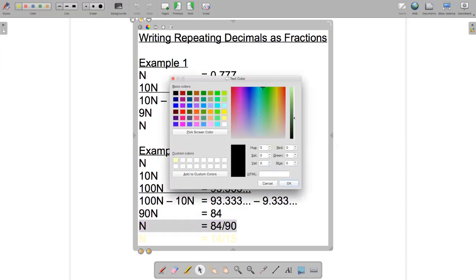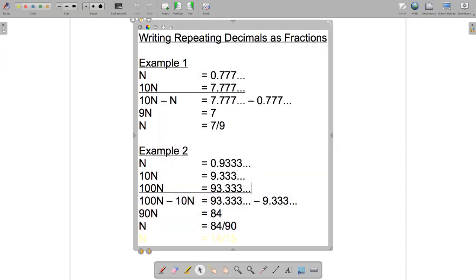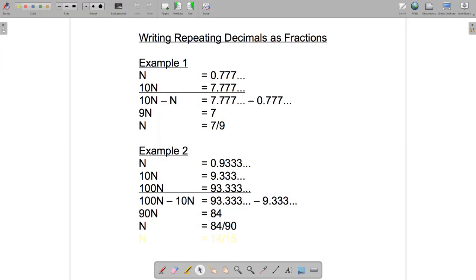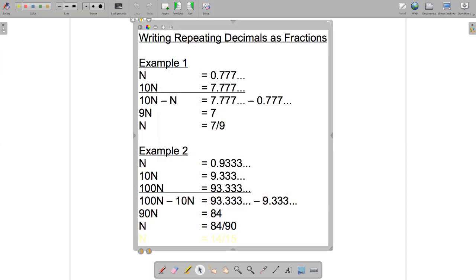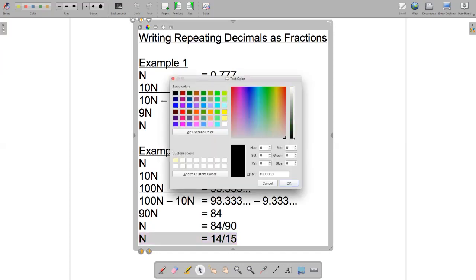But we're not quite done yet because that's not in simplest form. You should always write fractions in their simplest form where possible and in this case we can reduce this to n equals 14 divided by 15.